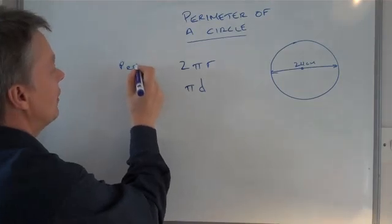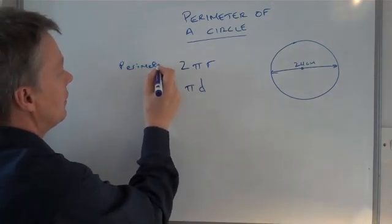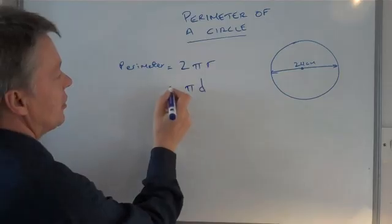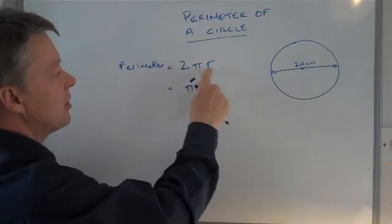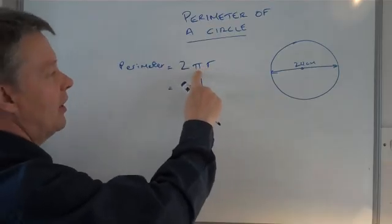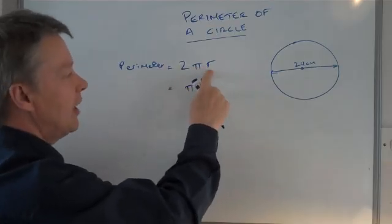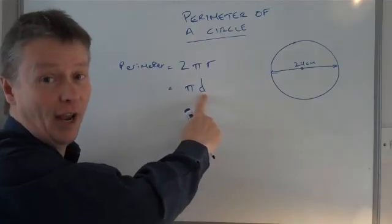So perimeter equals either 2 pi r or pi d. What they mean by that is that it's 2 times radius times pi. Well, 2 times radius is exactly the same as diameter.